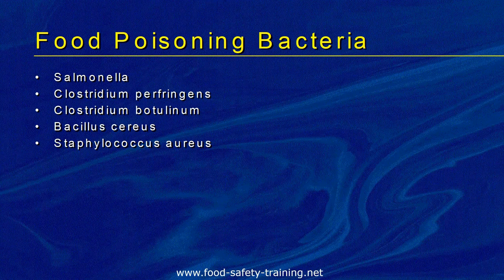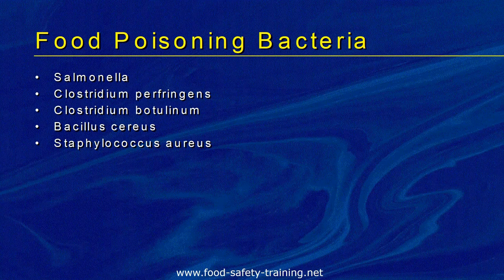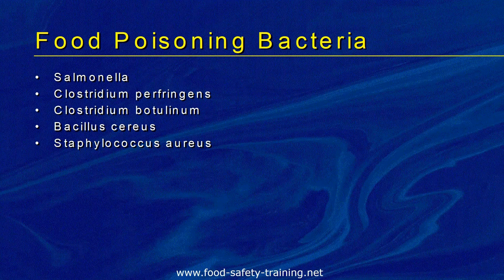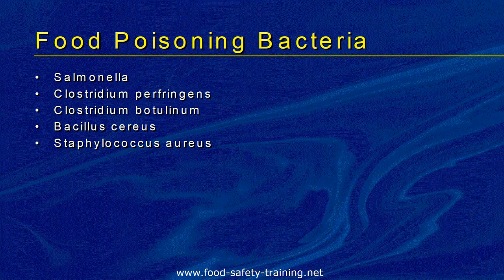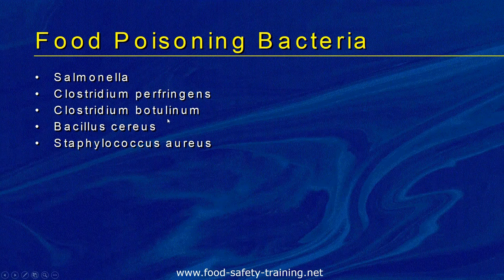Let's look at some food poisoning bacteria — you don't need to remember how to spell these for the exam but it's worth knowing. Salmonella is a big cause of food poisoning with about 2,500 different types, some named after the place they were discovered, such as Salmonella Cardiff. Then there are two types of Clostridia: Clostridium perfringens and Clostridium botulinum. Clostridium botulinum produces the world's worst toxin — a neurotoxin that can kill within two minutes. Botulinum toxin is also used in Botox.